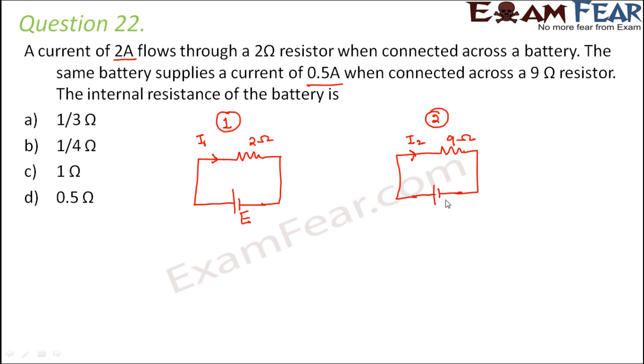Now since this is the same battery, therefore the EMF of the cell would remain the same. And let us assume that the internal resistance is small r. Now since it is the same cell, so the EMF and the internal resistance will remain the same. Now in case 1, we can say that E is equal to I1 into capital R plus small r, because E, the net EMF across the circuit, will be equal to I1 into R, that is the voltage drop across the external resistor, plus the voltage drop across the cell because it has some internal resistance.